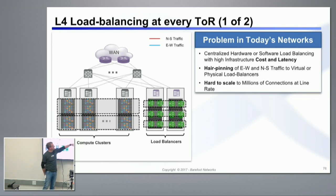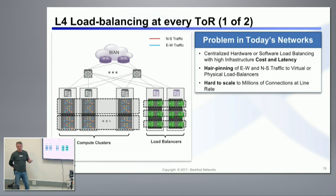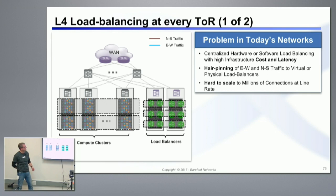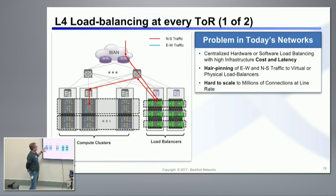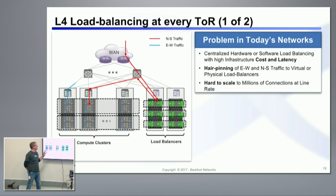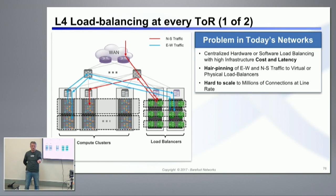Other problems beyond infrastructure cost and latency include the lifecycle management of that separate middlebox — you need to upgrade it and maintain software releases. Also, because it sits in a very specific part of your data center, you end up hairpinning traffic. For both north-to-south and east-to-west traffic, you have to go where that load balancer sits.